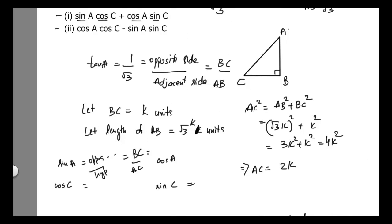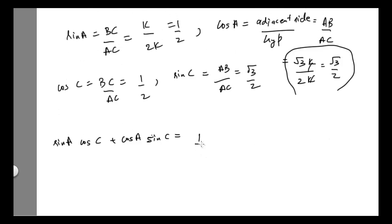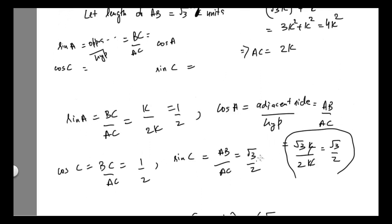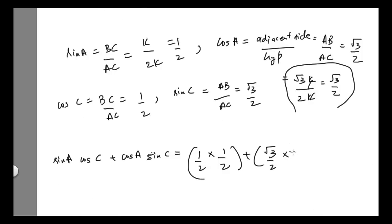Now we put in the values. The first expression is sin A·cos C + cos A·sin C. Substituting: sin A is 1/2, cos C is 1/2, cos A is √3/2, and sin C is √3/2. So we get (1/2)(1/2) + (√3/2)(√3/2) = 1/4 + 3/4 = 4/4 = 1.